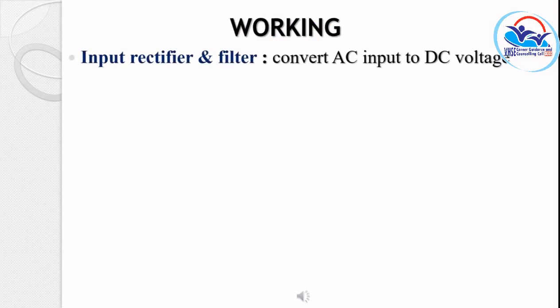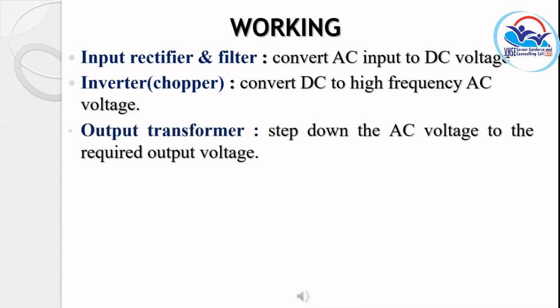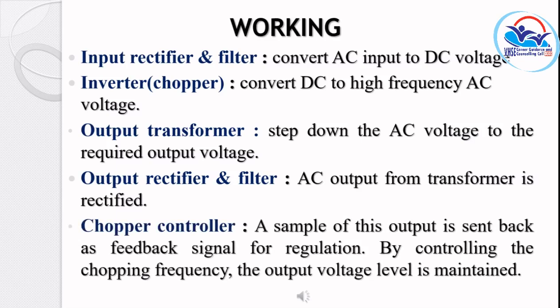The input rectifier and filter converts AC into DC voltage. The high voltage DC is then processed by the chopper. The output transformer steps down the high voltage DC. The output is sent back as a feedback signal for regulation. SMPS uses a feedback mechanism; by controlling the chopping frequency, the final output voltage is maintained as constant.